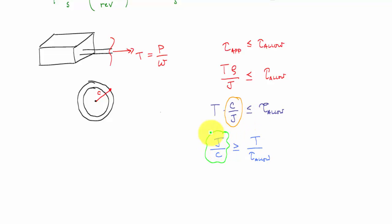This J over c - you can choose the appropriate ratio of polar moment of inertia to outer radius that satisfies this relationship and thus your basic design relationship for torsion.